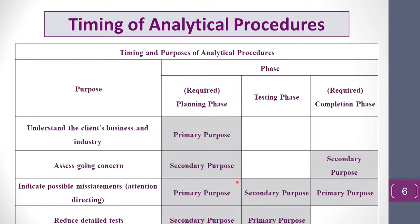The table shows the objectives of analytical procedures during each of the three phases. The shaded areas indicate when each purpose is applicable in each phase. More than one purpose may be applicable at the same time. Analytical procedures in the planning phase serve all four purposes, while in the other two phases they are primarily used to determine appropriate audit evidence and reach conclusions about the fair presentation of financial statements.